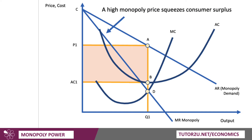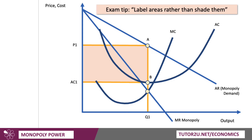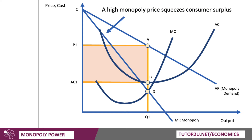The key point here is that the monopoly charges a high price, P1 — a price well above cost — and that squeezes consumer surplus. I've now added in points C and D. So at the monopoly price P1, consumer surplus is the area C, A, P1 — shown there in green. You can see that this is a highly profitable monopoly with limited consumer surplus.